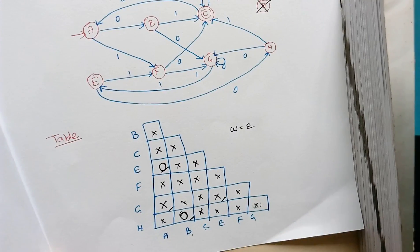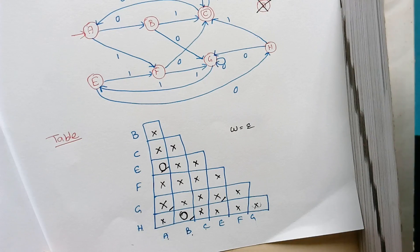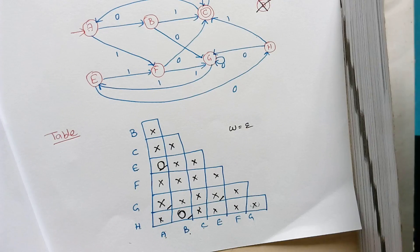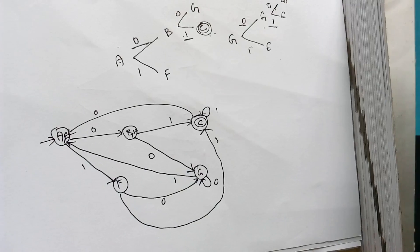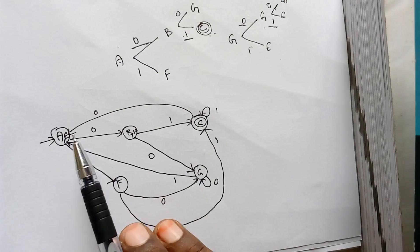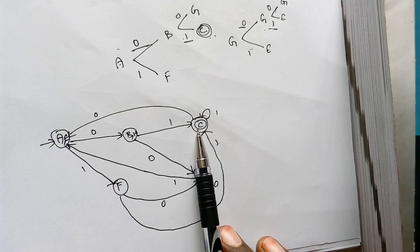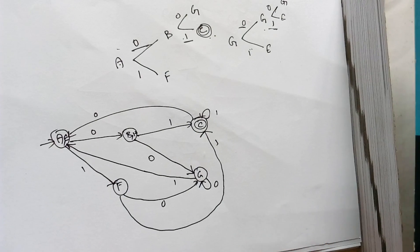Finally, we have two equivalent pairs: A and E are equivalent, and B and H are equivalent. In the transition diagram we combine these two pairs of states together and draw the minimized transition diagram. This is the final minimized DFA where states A and E are combined, B and H are combined, and C remains the only final state. Thank you.